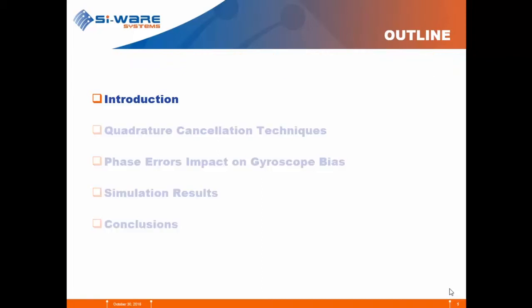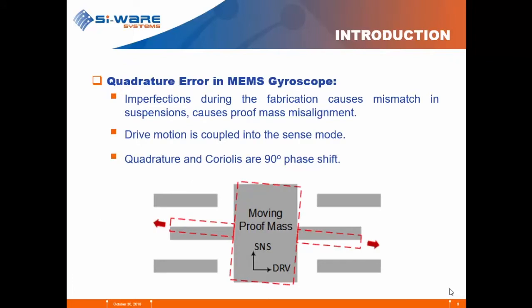Starting with an introduction: the quadrature error in MEMS — as most of you are aware — is an imperfection during fabrication of the MEMS which causes proof mass misalignment. This causes the drive motion to couple into the sense mode, which generates the unwanted quadrature signal. The quadrature signal is 90 degrees phase-shifted from the Coriolis signal, which is our target.